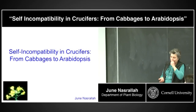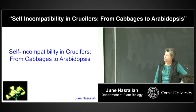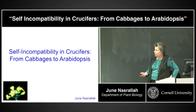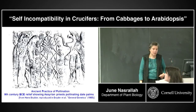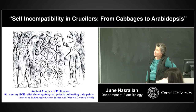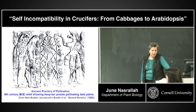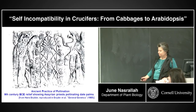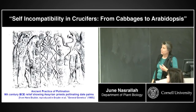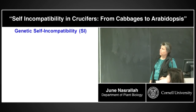I'm going to be talking about our study of self-incompatibility in crucifers, or the Brassicaceae family, and how we started our work in cabbages and moved to Arabidopsis. People have known for a very long time that some plants need to be manually pollinated to get seed or fruit. This is because many plants have mechanisms that prevent self-fertilization, and one of the major such mechanisms is genetic self-incompatibility, which is the system we work on.